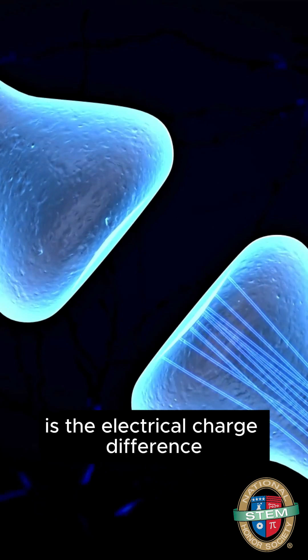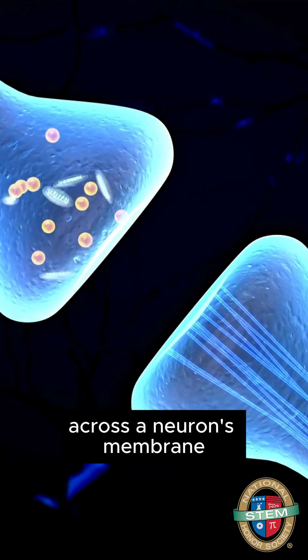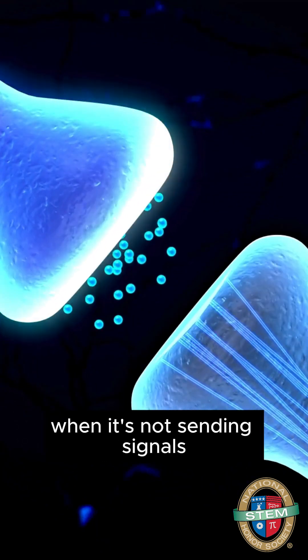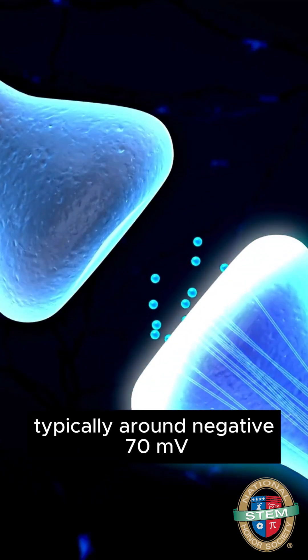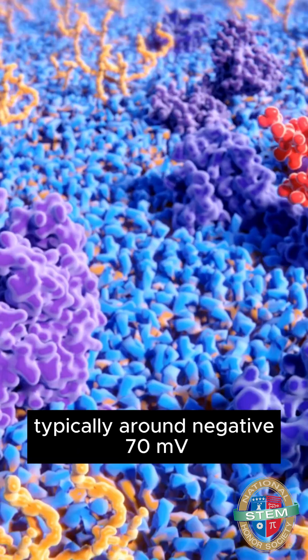Resting membrane potential is the electrical charge difference across a neuron's membrane when it's not sending signals, typically around negative 70 millivolts.